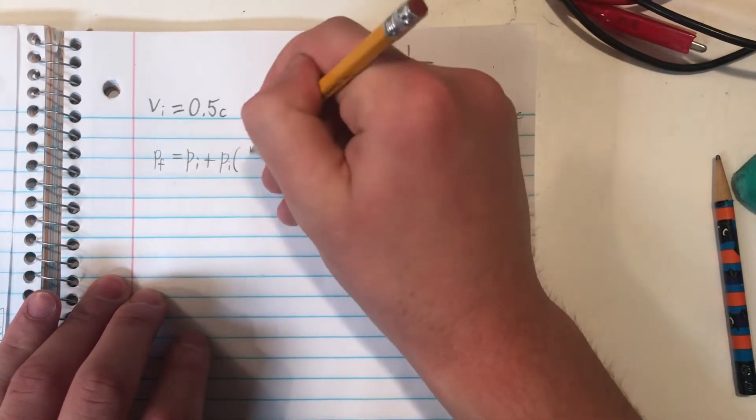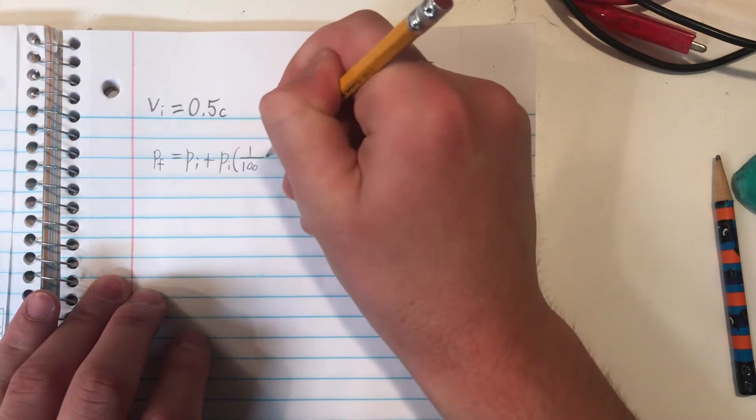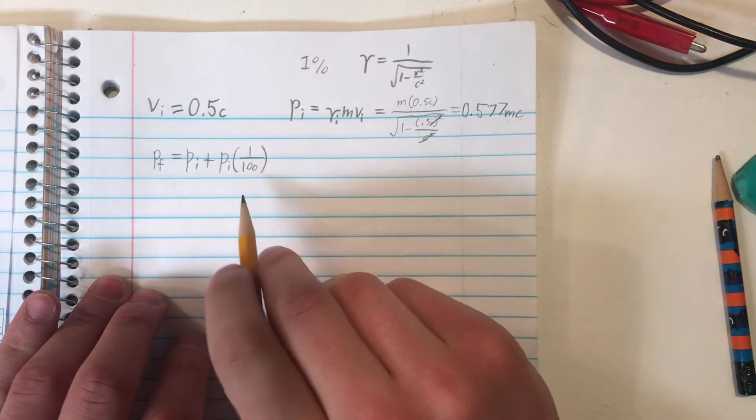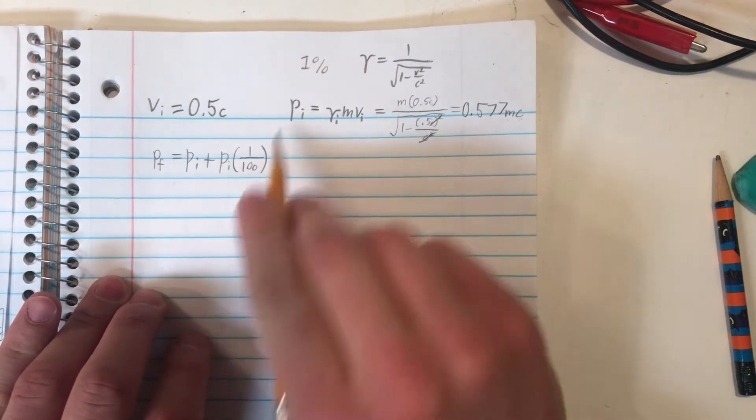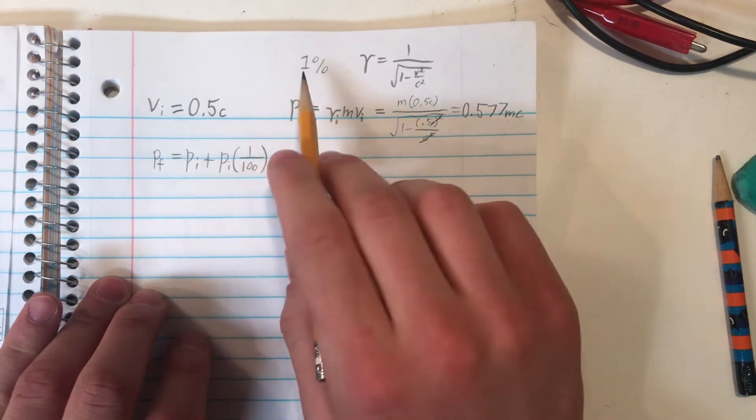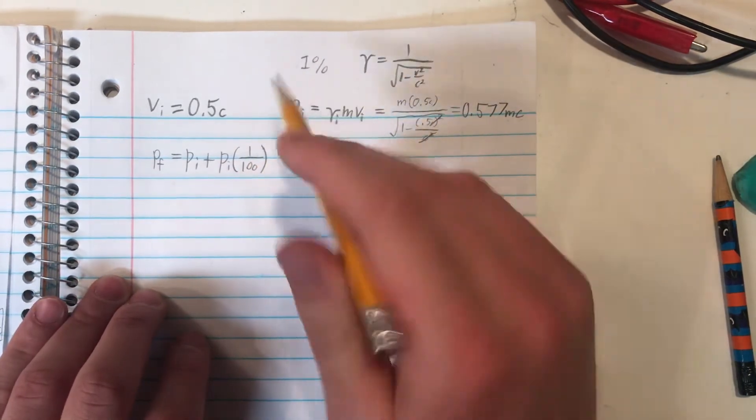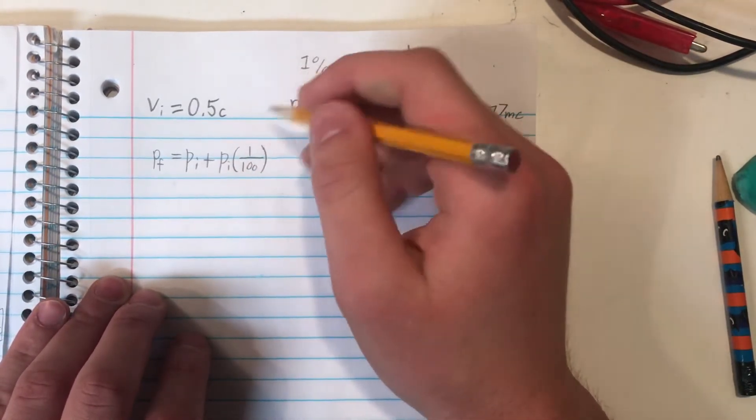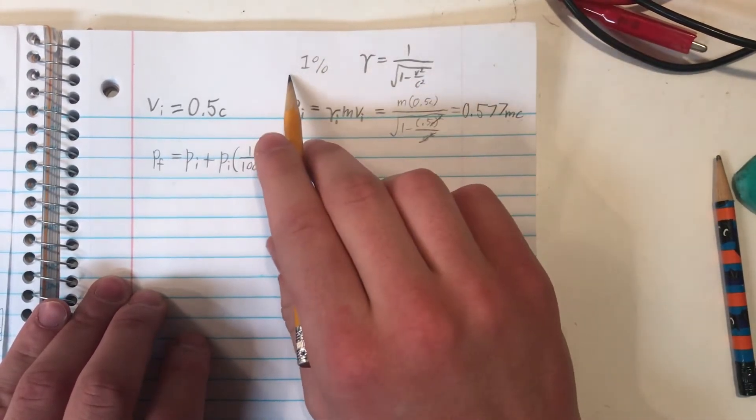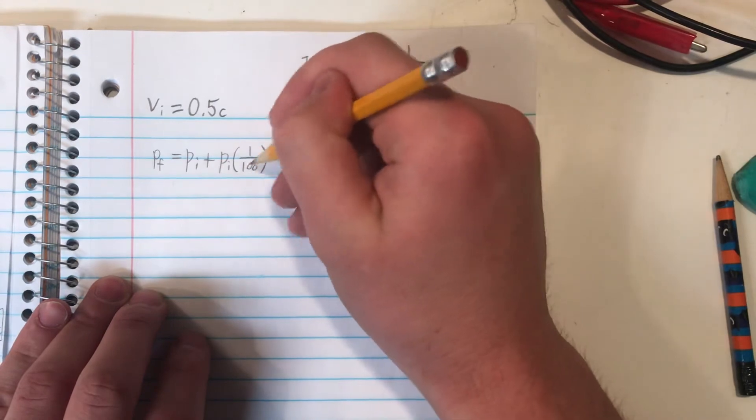So in my case, I'm going to write 1 over 100, because that is the fractional representation of the percent. So just whatever the percent is divided by 100. So for example, if you get 10%, then you'd write 10 over 100, or just 1 over 10 to simplify it. Or if you're looking for an increase of 100%, you'd write 100 over 100, or just 1.